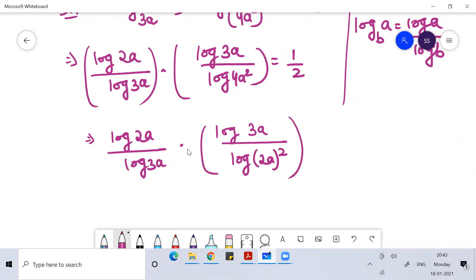I hope you're understanding, 2A square is 4A square. That is equal to 1 by 2. So you can see this log 3A log 3A will get canceled.